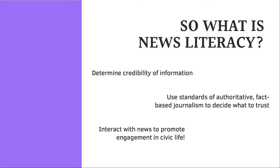So what is news literacy? News literacy is being able to determine the credibility of information — being able to go online, come across an article someone shared, and be able to say that is something I trust, or something I don't trust, or that is something that is patently false. To do that, you kind of have to understand the standards of authoritative fact-based journalism. There are a ton of different codes of ethics that circulate through the journalism world, but there are five things that you can distill out of all of them. These five mostly come from the Ethical Journalism Network and SPJ, the Society of Professional Journalists.